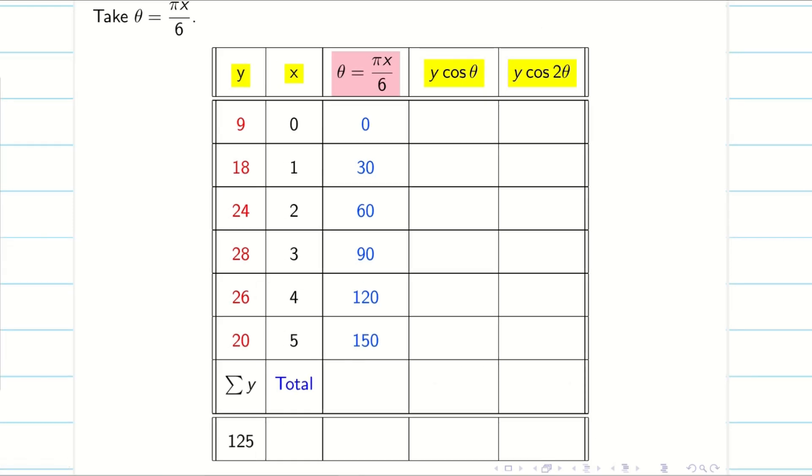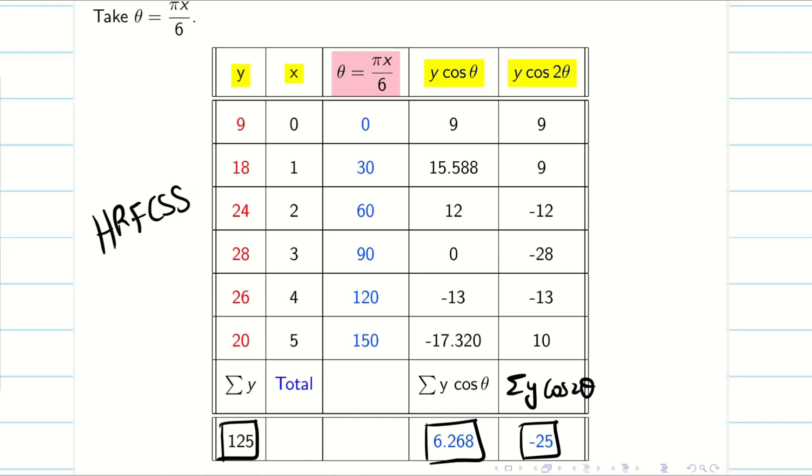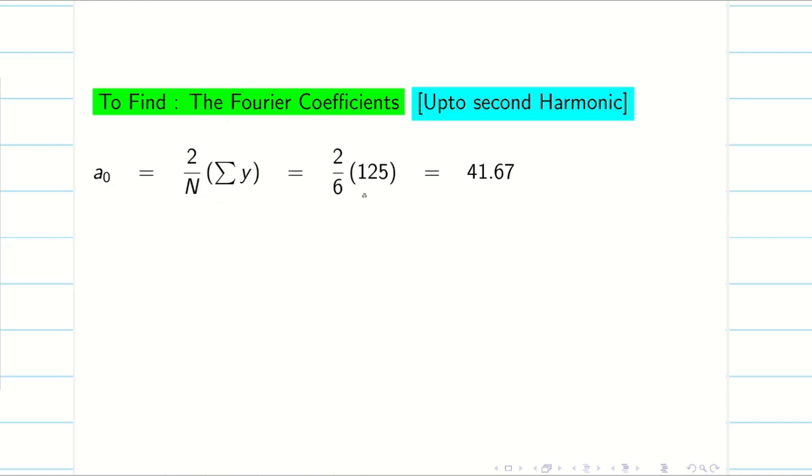Now, let us fill the table using the calculator. We will get the answer 1 by 1. Just use the calculator in a simplified way to get the answer. Now, we have to make the total. So, summation y cos 2 theta is minus 25. Summation y cos theta is 6.268. Summation y is 125. From this, we are going to find a0, a1 and a2 because the problem is half-range Fourier cosine series.